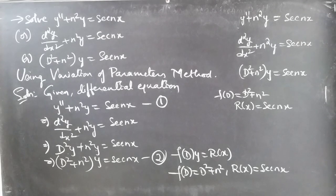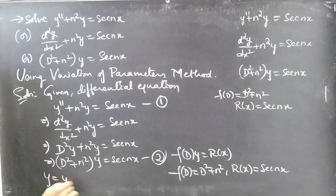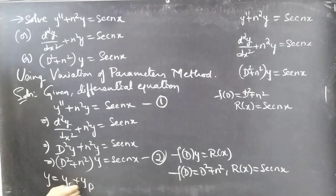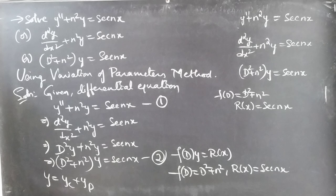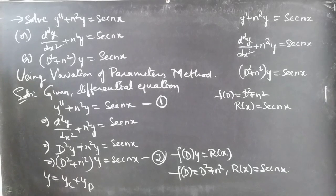We'll find the general solution using y = yc + yp, where yc is the complementary function and yp is the particular integral. We'll find yc using the auxiliary equation, and then use yc to find yp. Now coming to the auxiliary equation.